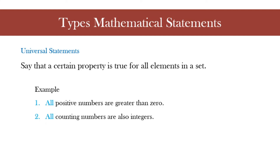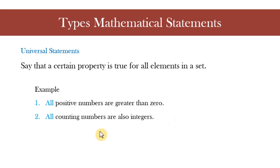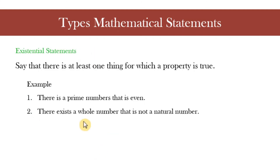Here are the different types of mathematical statements. The first is called a universal statement — these are statements that say a certain property is true for all elements in a set. For example: all positive numbers are greater than zero; all counting numbers are also integers. The universal statement usually uses the key term 'all,' which guides us to identify it as universal.